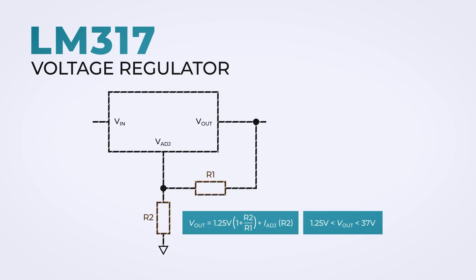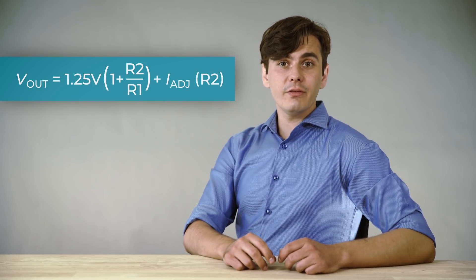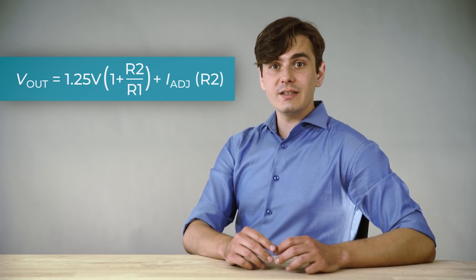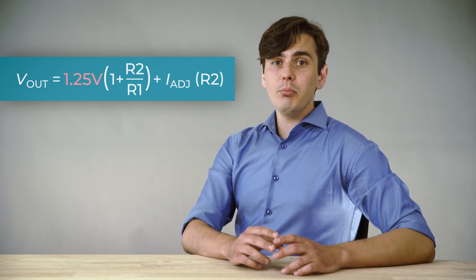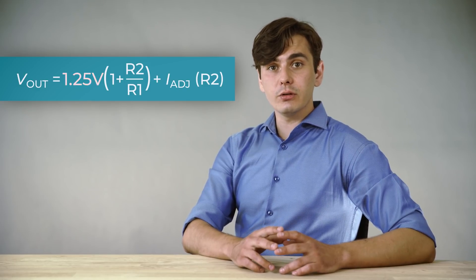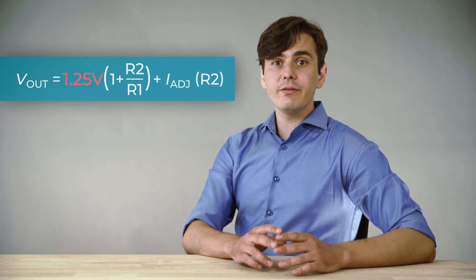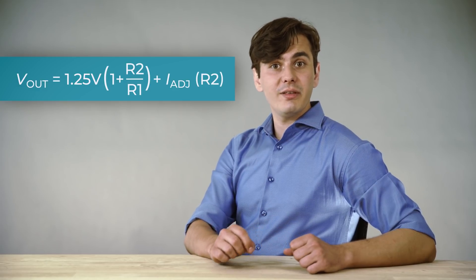To do so, you need to add two resistors in voltage divider configuration, and your output voltage will be equal to this equation. The equation derives from the non-inverting operational amplifier inside of the regulator. The 1.25V is a reference voltage that is connected to the non-inverting terminal of the operational amplifier.